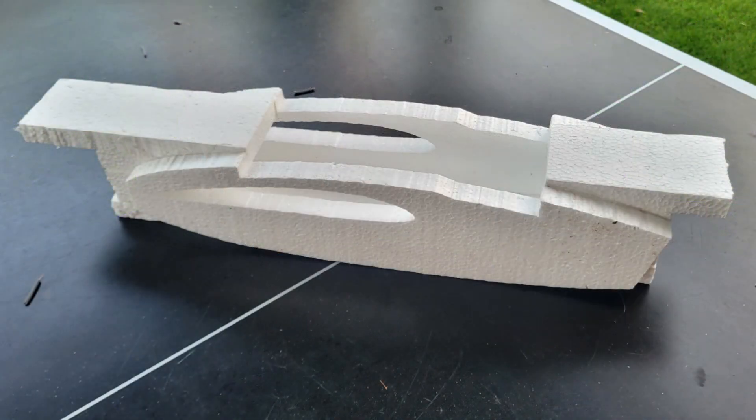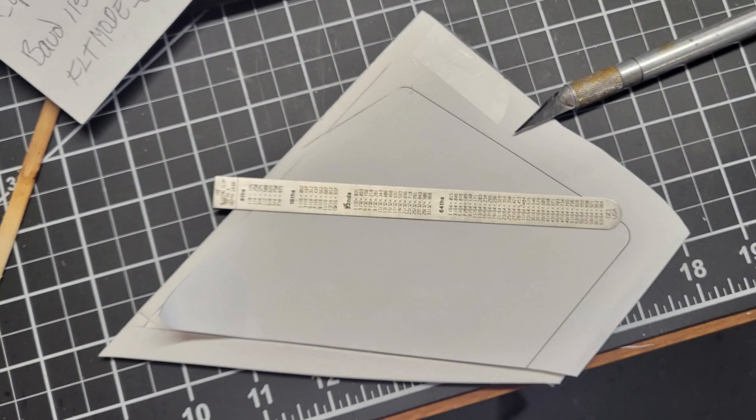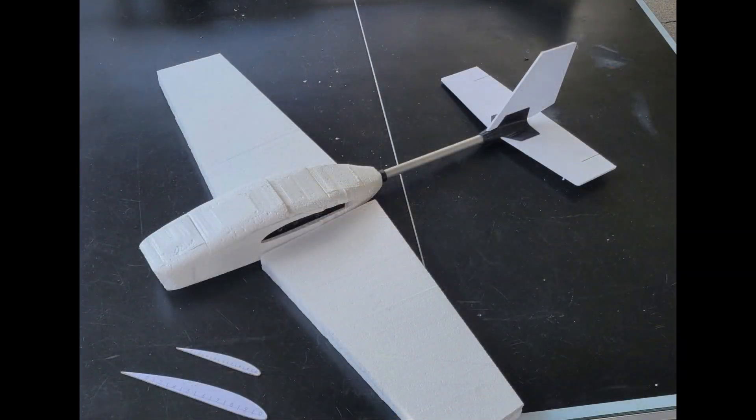This styrofoam also sands very easily. You can get nice radiuses on your corners. The tail surfaces are even easier. I just take that foam board, lay a template on it, and cut it out with an exacto knife. And here I have the fuselage and tail section complete.